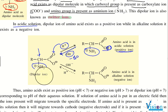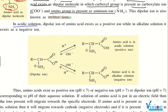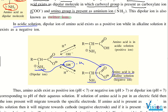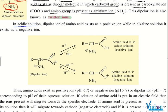Same way, if you put the zwitterion in basic medium with OH⁻, the OH⁻ removes H+ and H2O is gone. That means NH3⁺ now becomes NH2, and COO⁻ remains as it is. That's why the amino acid in alkaline solution exists as a negative ion. So in acidic solution, the dipolar ion of amino acid exists as a positive ion, while in alkaline solution it exists as a negative ion.